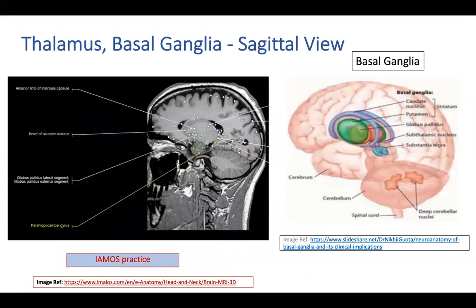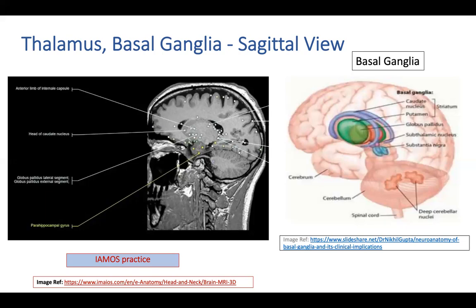Looking at basal ganglia and thalamus from a sagittal section — sagittal sections always start from the left side of the brain and move across the midline to exit out the right side. Coming up the brain stem you have medulla, pons, and midbrain; to the lateral sides you have the thalami, and lateral to that the basal ganglia. As you scroll left to right, you'll see basal ganglia first, then the brain stem where you can see all three structures at midline, then thalami and basal ganglia coming out the right side.